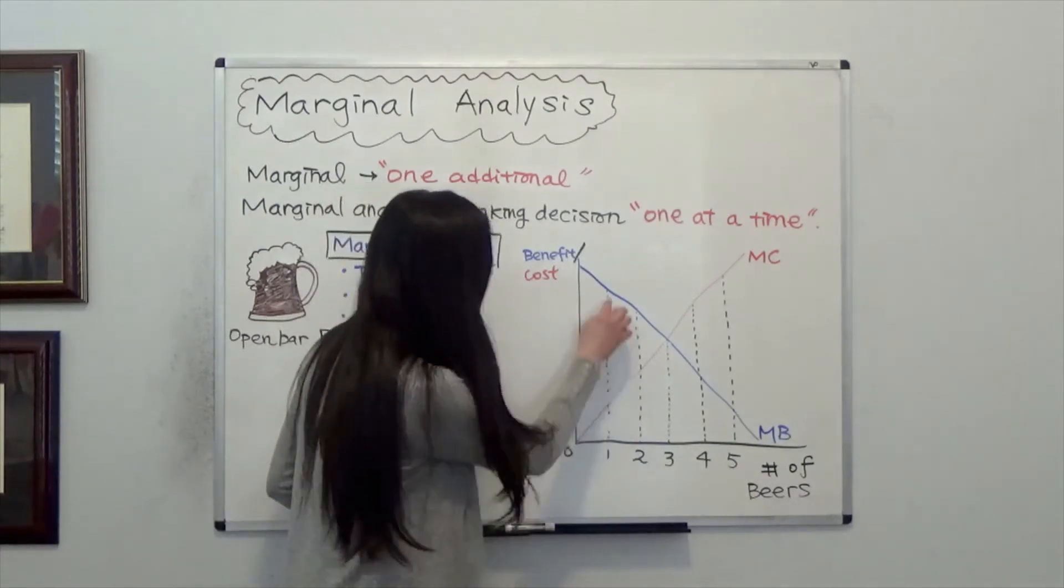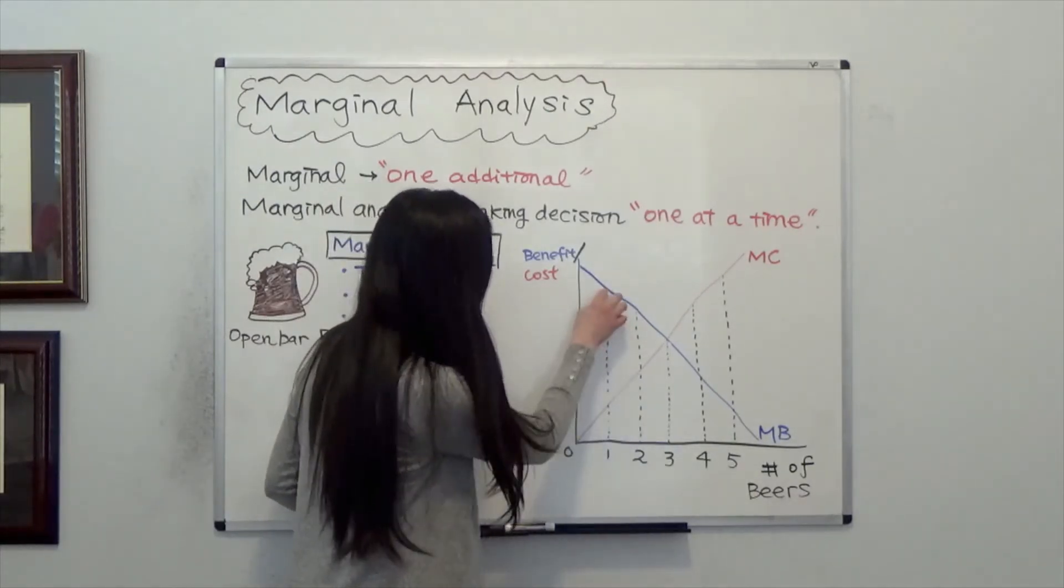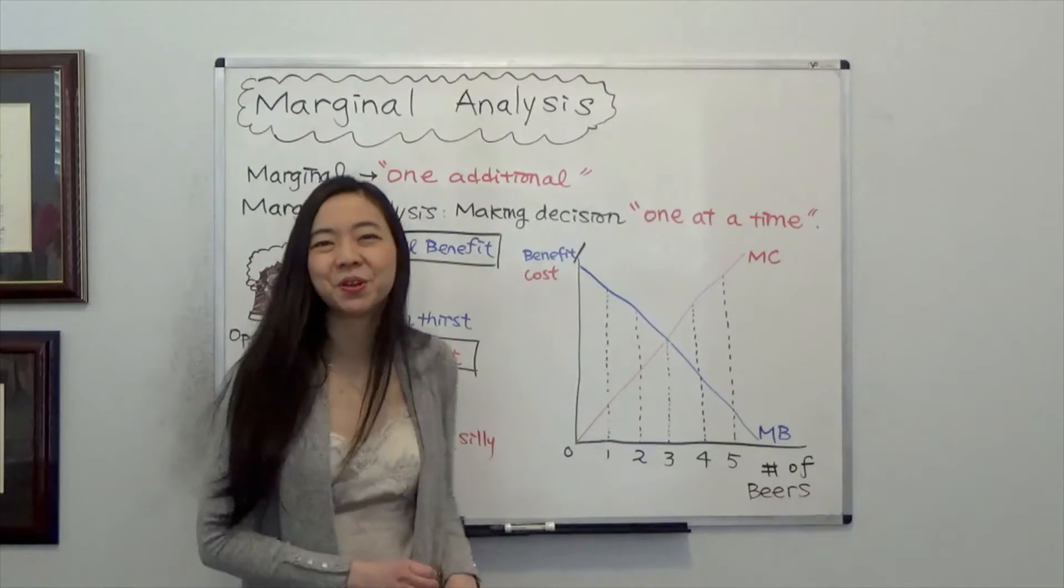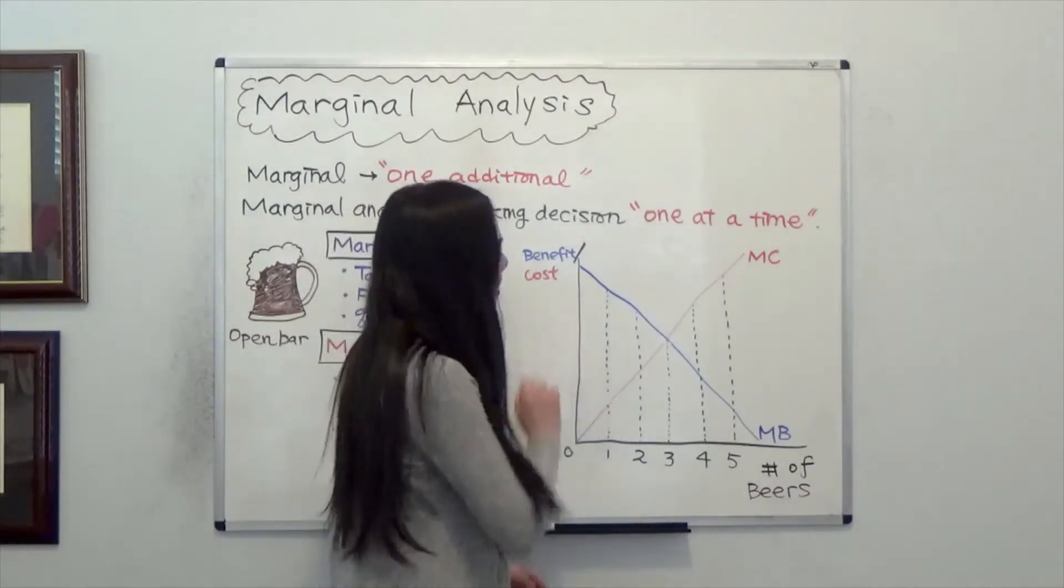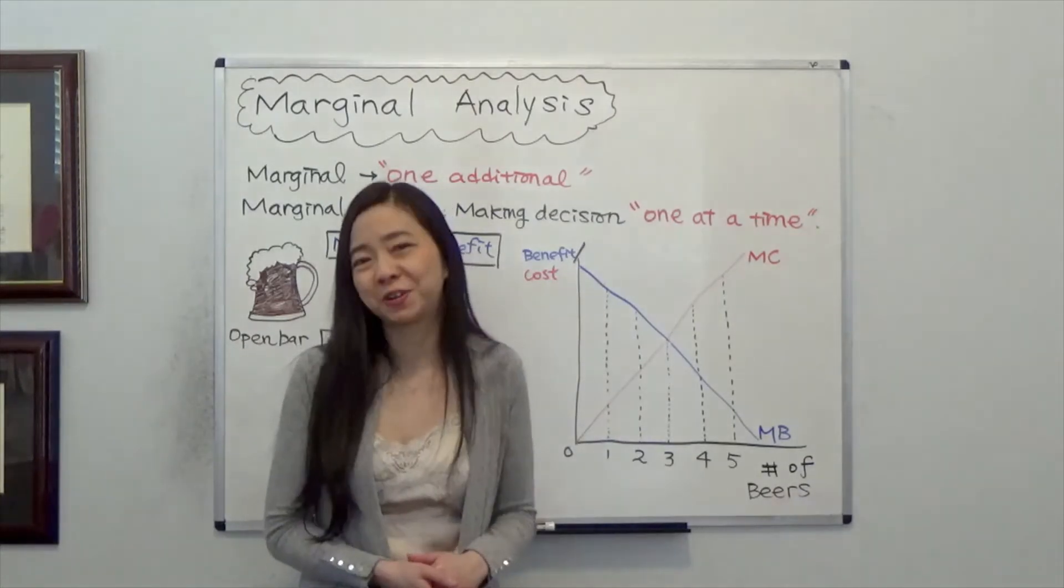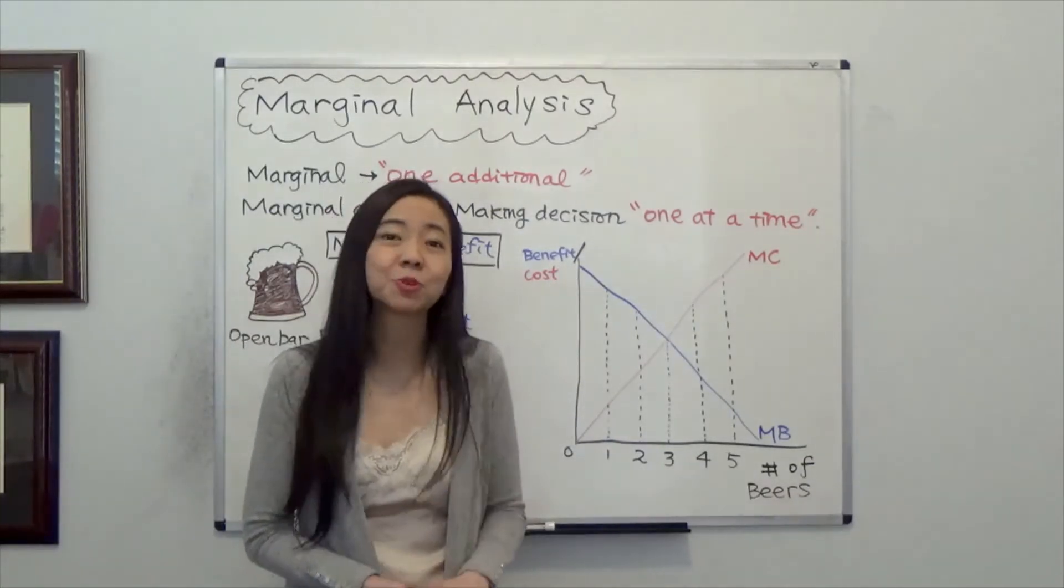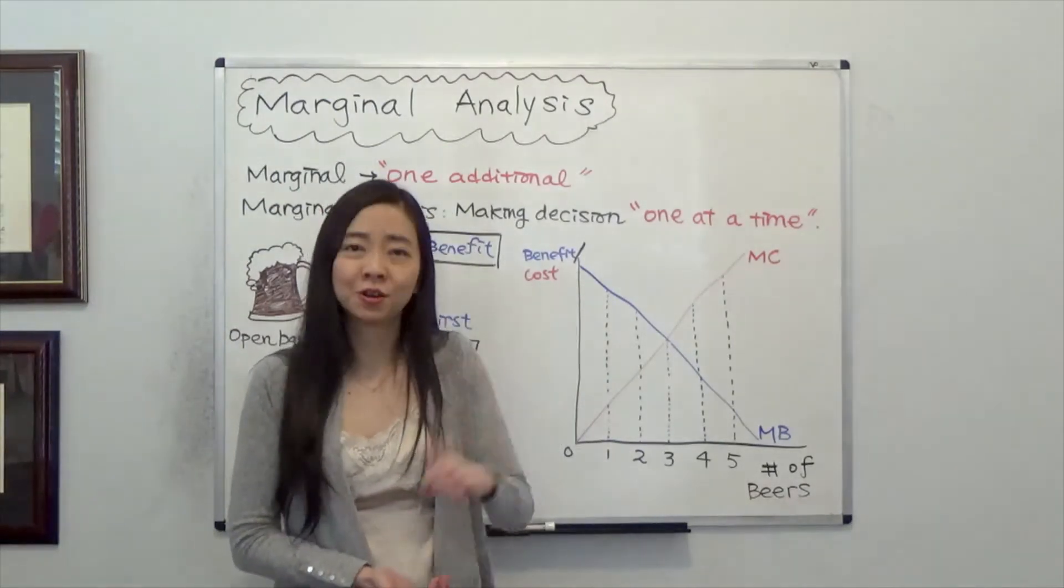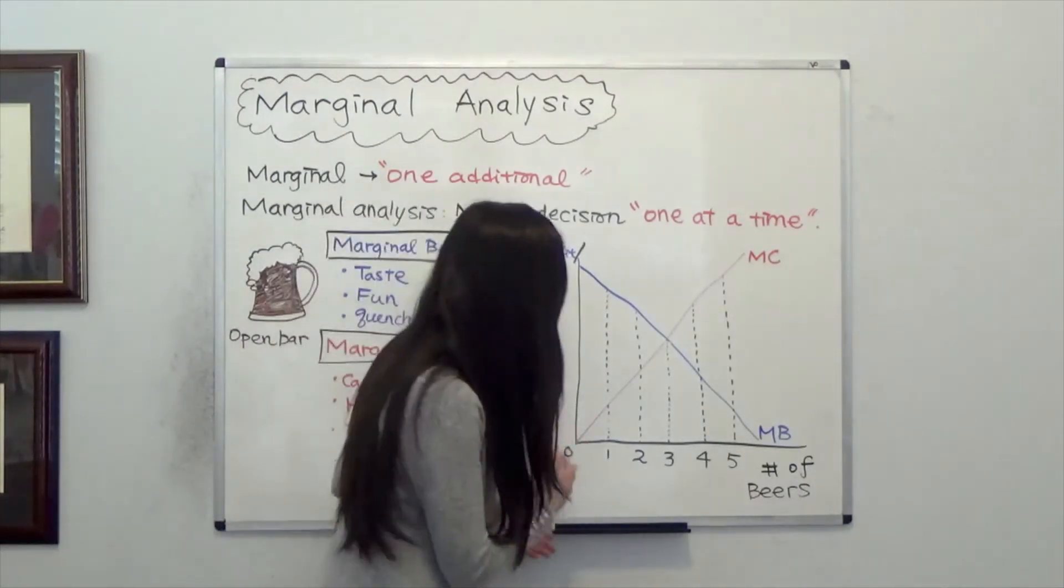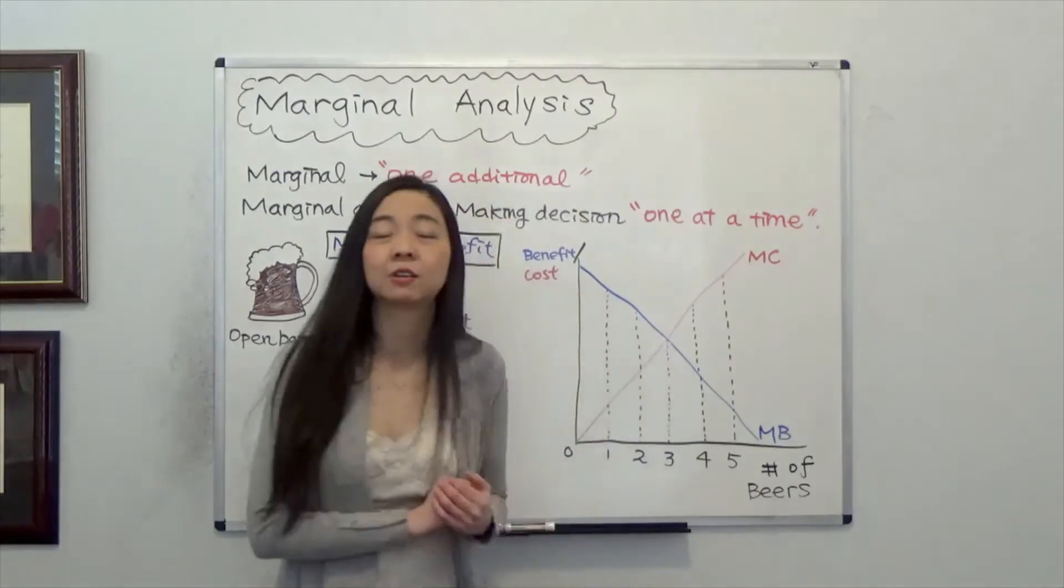Because the first can of beer, the marginal benefit is still higher than the marginal cost. So when you're deciding whether you're going to drink a second can, you think, hey, it makes sense. The marginal benefit is still higher than the marginal cost. I am going to go ahead and have the second can. And so on and so forth. Until the marginal benefit is equal to marginal cost.